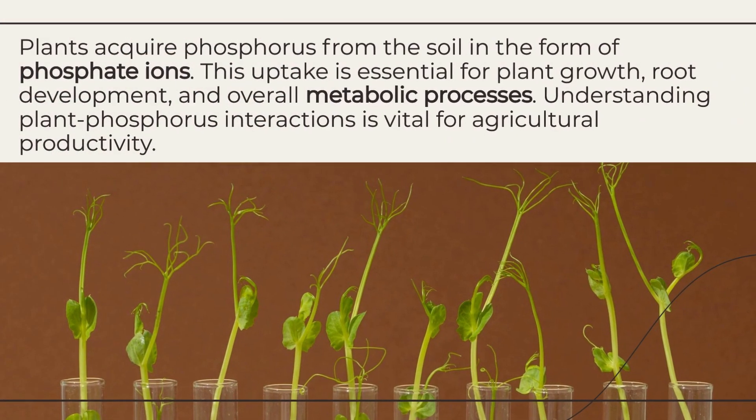Plants acquire phosphorus from the soil in the form of phosphate ions. This uptake is essential for plant growth, root development, and overall metabolic processes. Understanding plant-phosphorus interactions is vital for agricultural productivity.